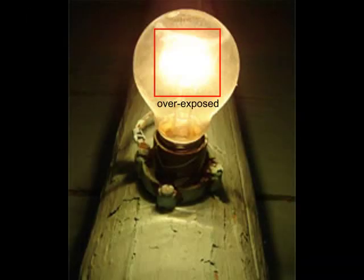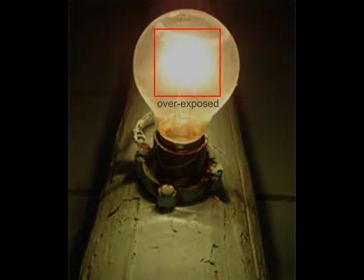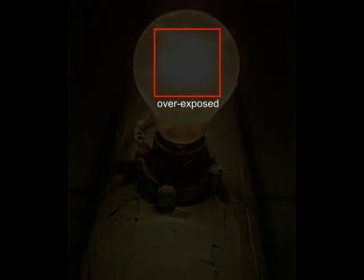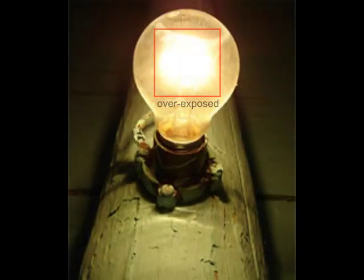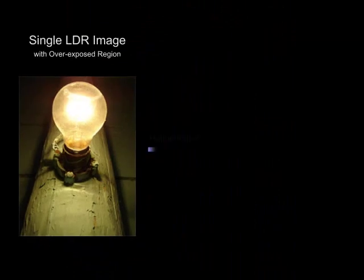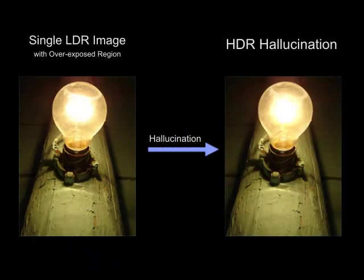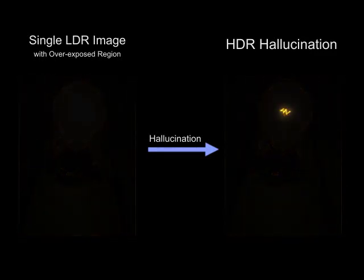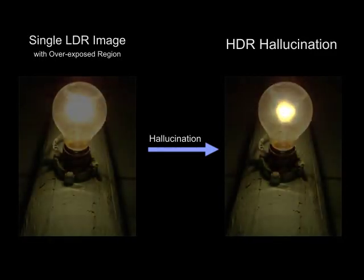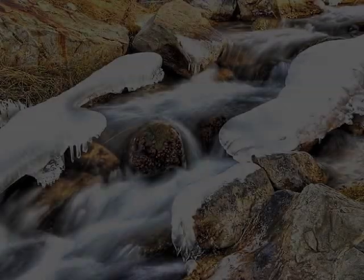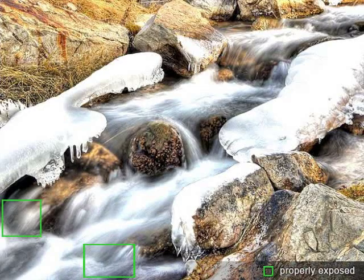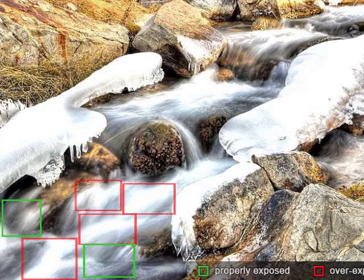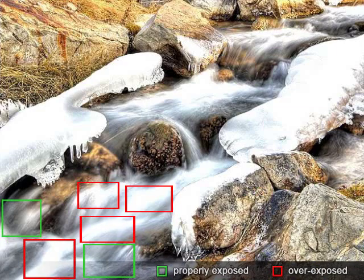Photos captured by traditional low dynamic range cameras often contain regions that are over or underexposed. In this paper, we present a technique to hallucinate high dynamic range details to these overexposed or underexposed regions. Our technique only needs the original photo as input. Our key insight is that many nature images contain high quality patches with similar textures to the regions that are over or underexposed.